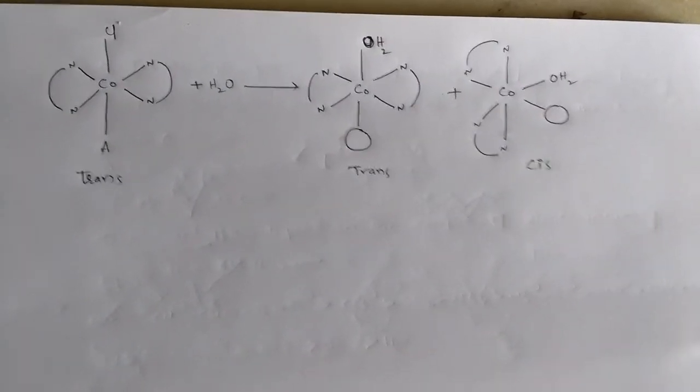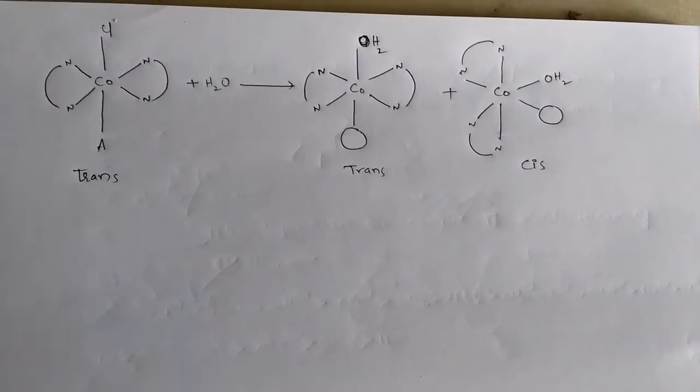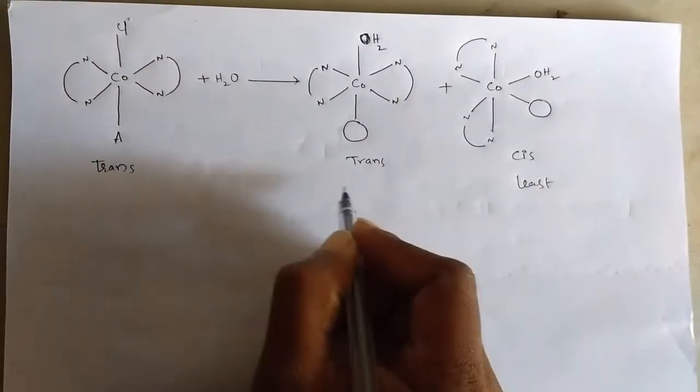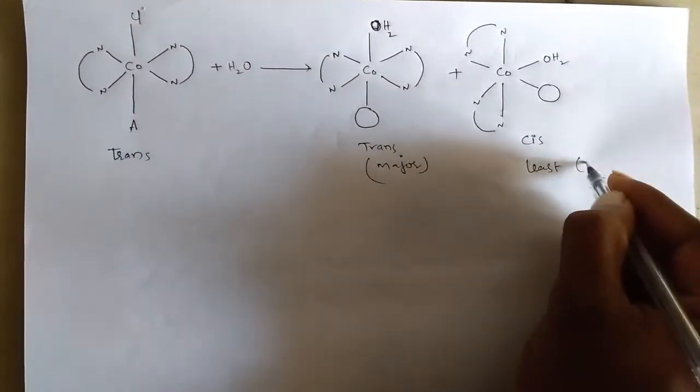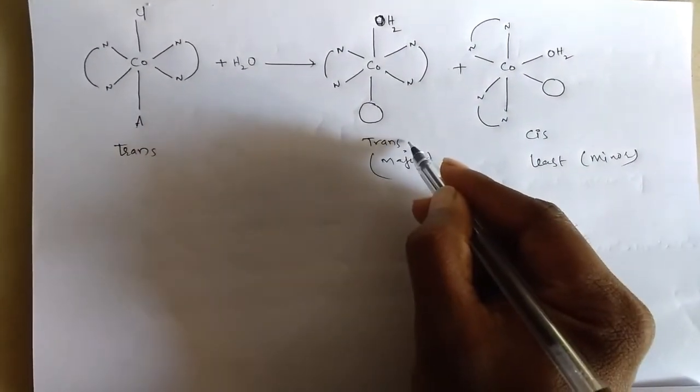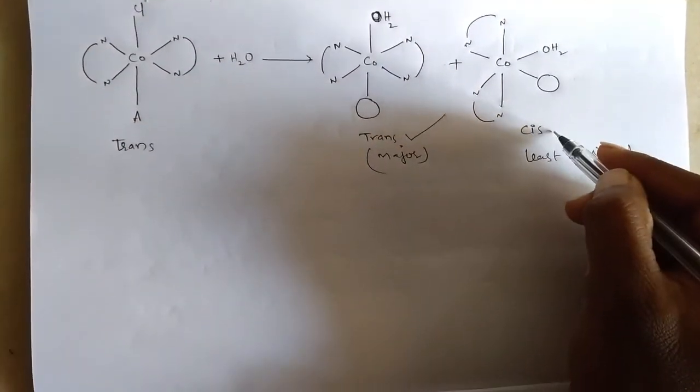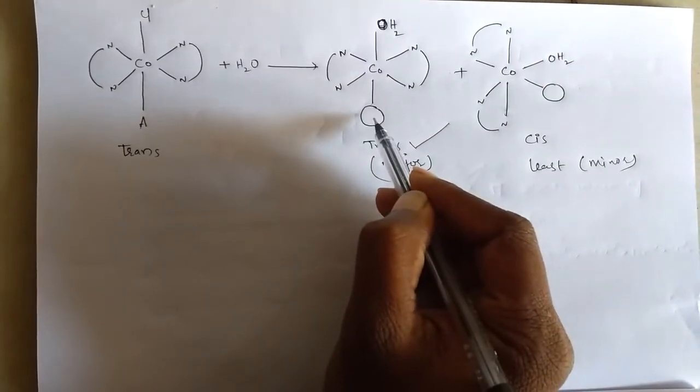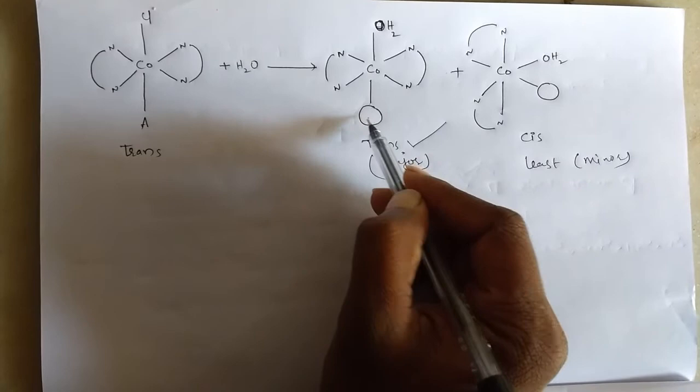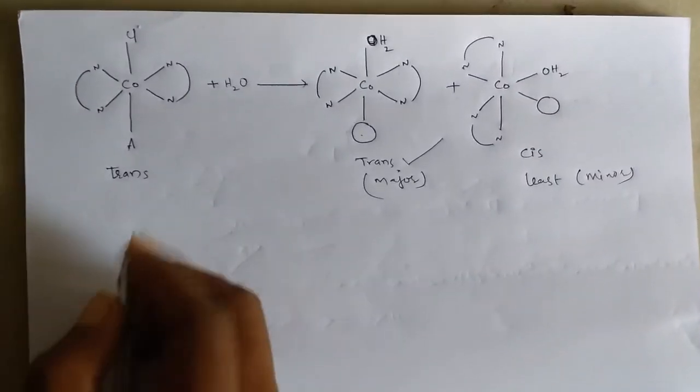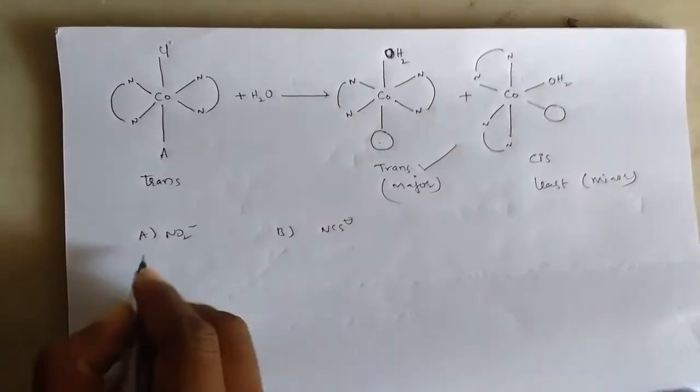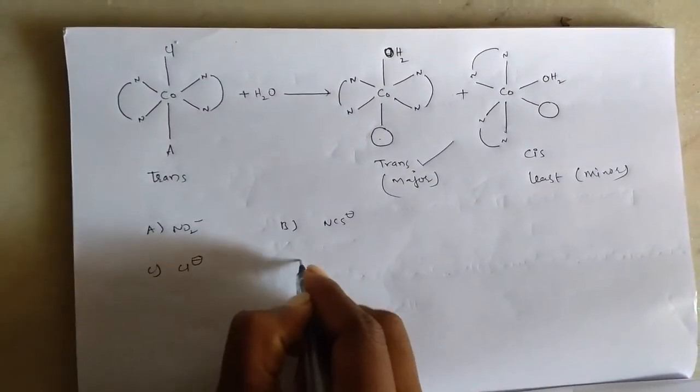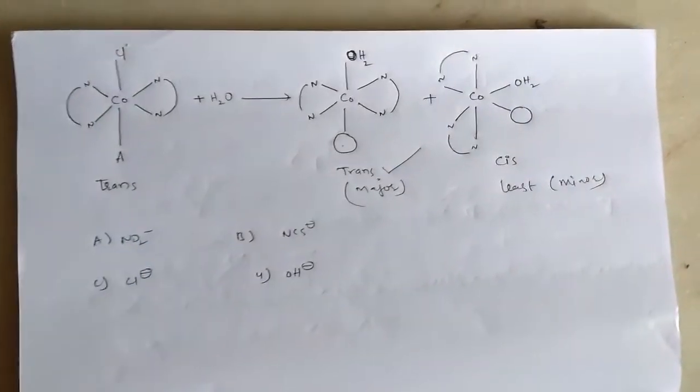In the problem, the cis product must be least, that means the trans product must be major. That means the trans product should be most major and cis product should be least. So to get trans, what should be the A? We have four options.